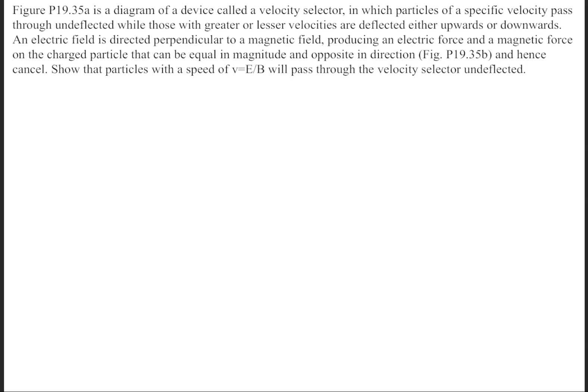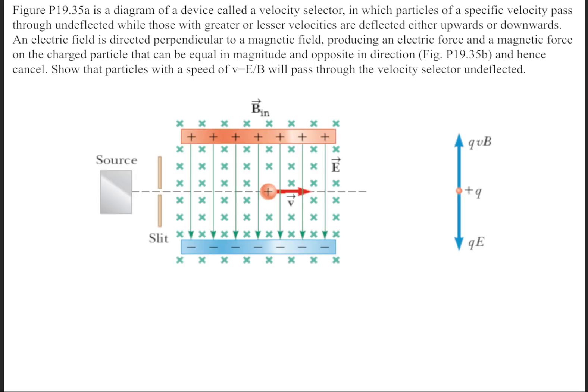So we need to prove that the speed of a particle going through what's called the velocity selector is equal to the electric field over the magnetic field. So let's begin with what the diagram of a velocity selector looks like.